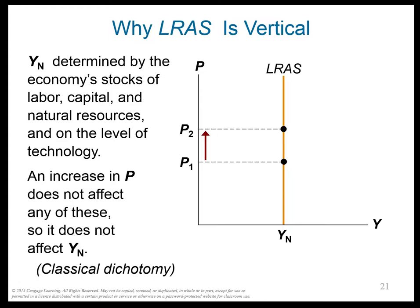Theory two is sticky prices. Firms set prices based on the expected price level PE. Remember menu costs? If the Fed unexpectedly increases the money supply, prices rise. Firms without menu costs can raise their prices, but firms with menu costs wait because it's costly to change their prices. So their prices stay low, people buy their products more, and those firms increase output. Higher P makes Y go up in the short run.